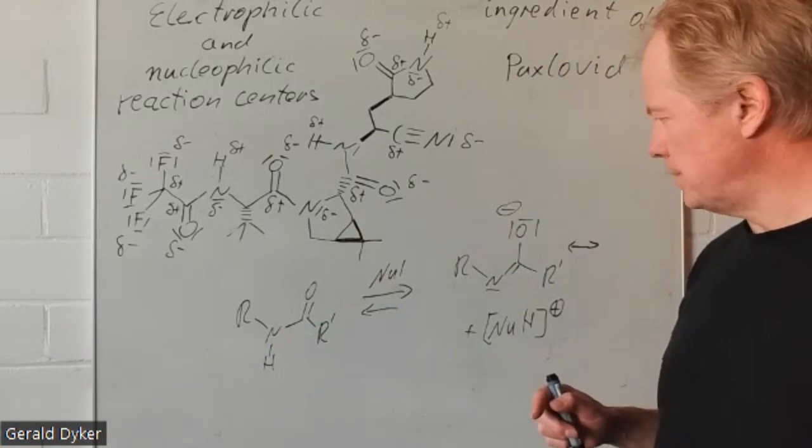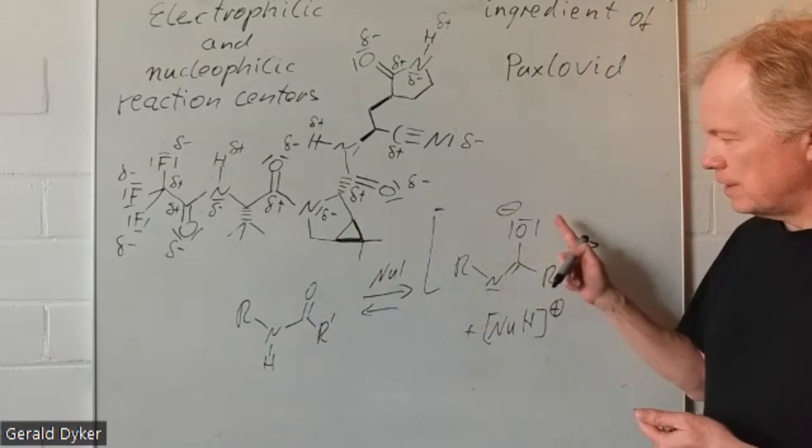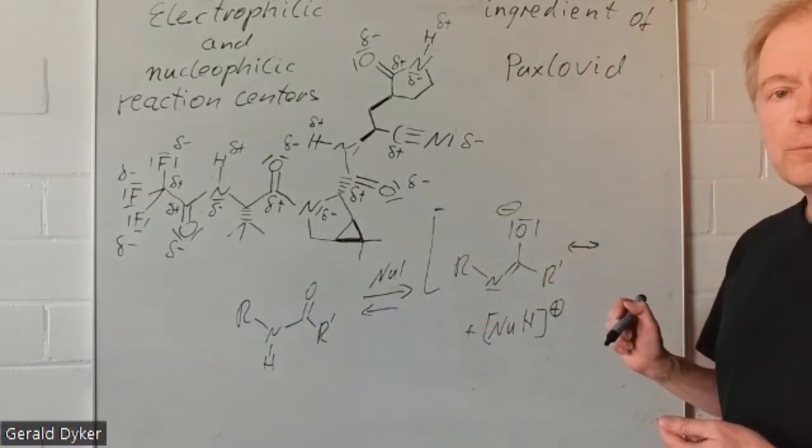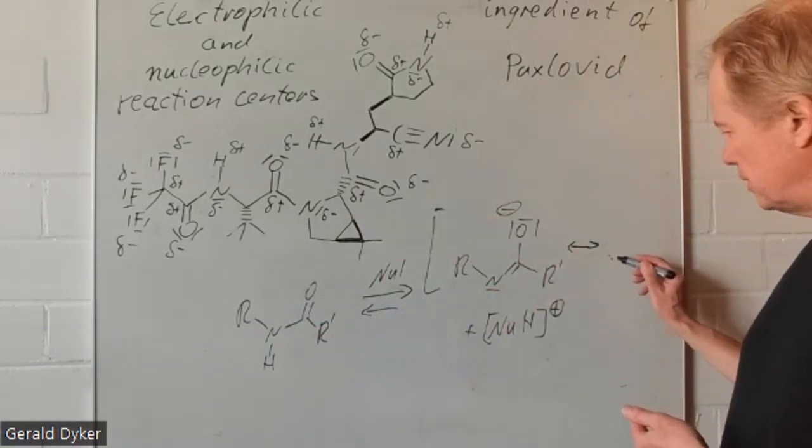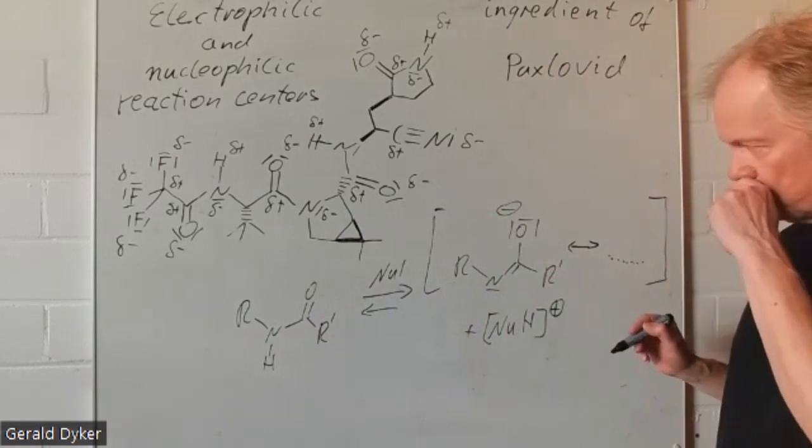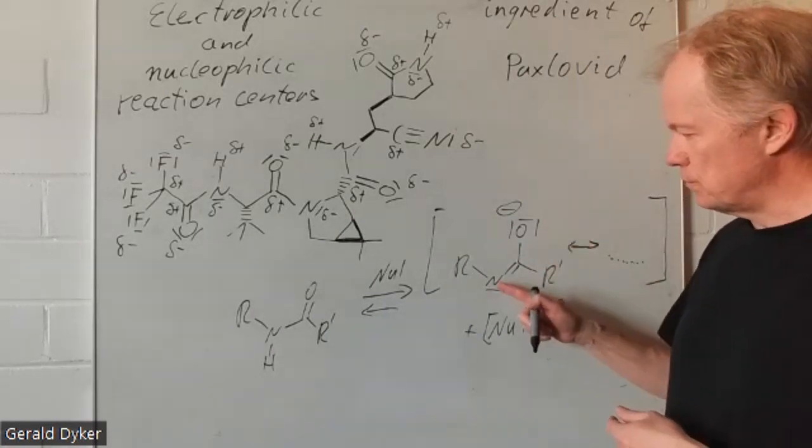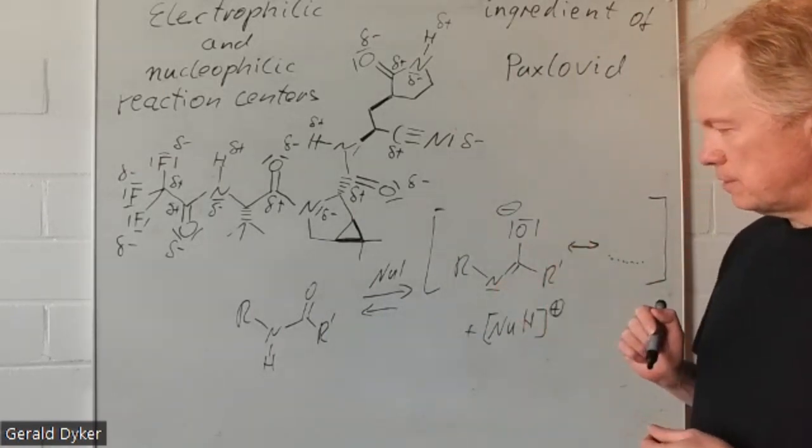And on the other hand, this anion is mesomerically stabilized. You can draw mesomeric structures, for instance, also with a negative charge to nitrogen.